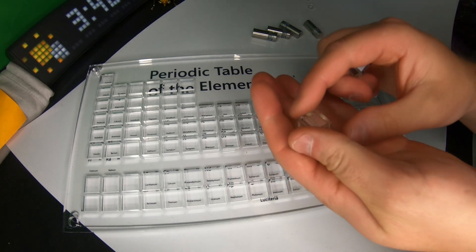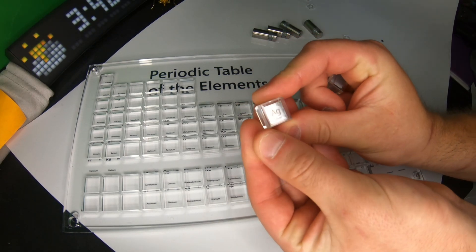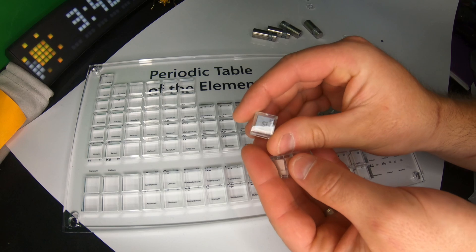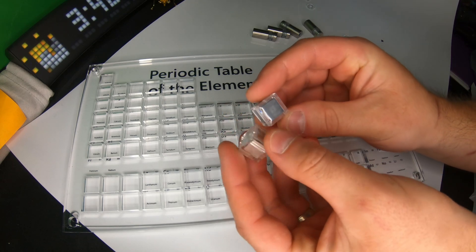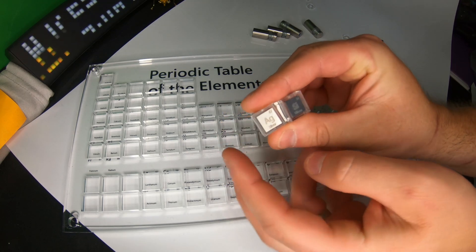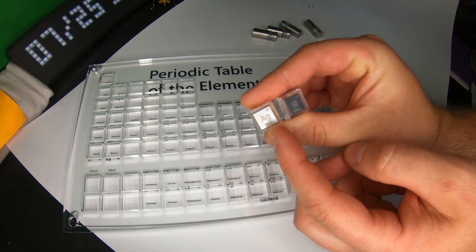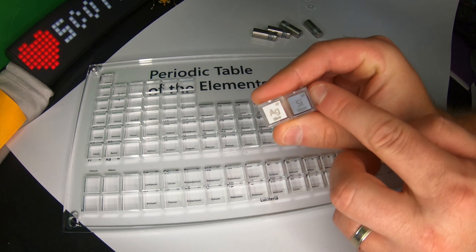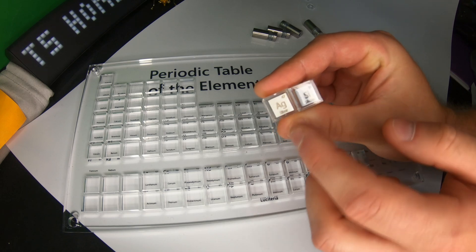And then we also have AG which is pure silver. Now these are 99.99% pure. So 99.99% pure silver, 99.99% pure silicon.